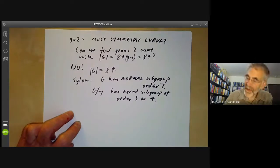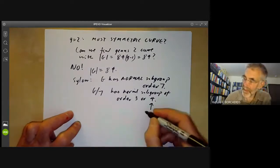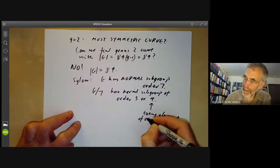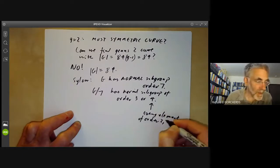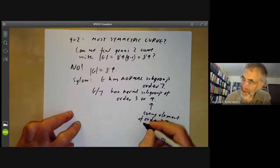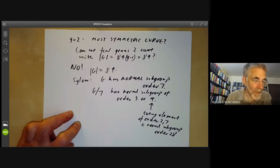So in the first case, sorry second case, if it is order four, then every element of order two or seven is in the normal subgroup of order 28, which has no elements of order three.